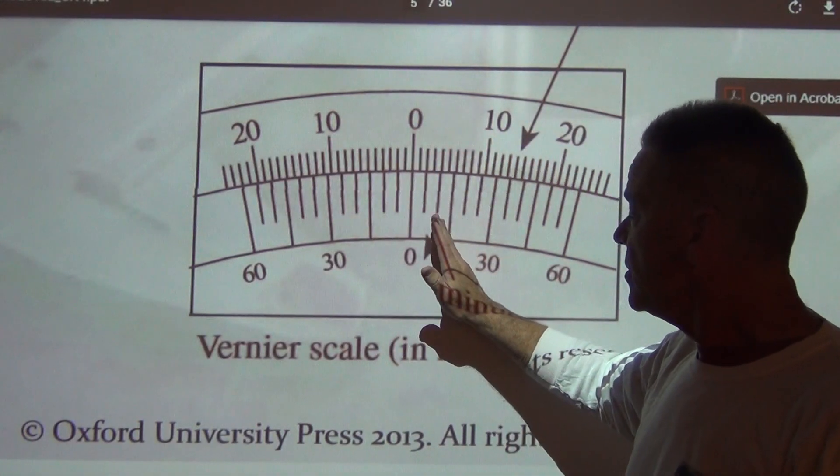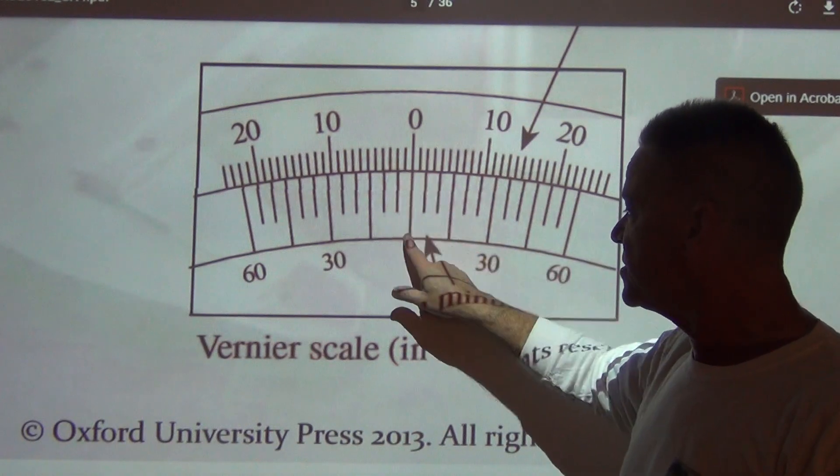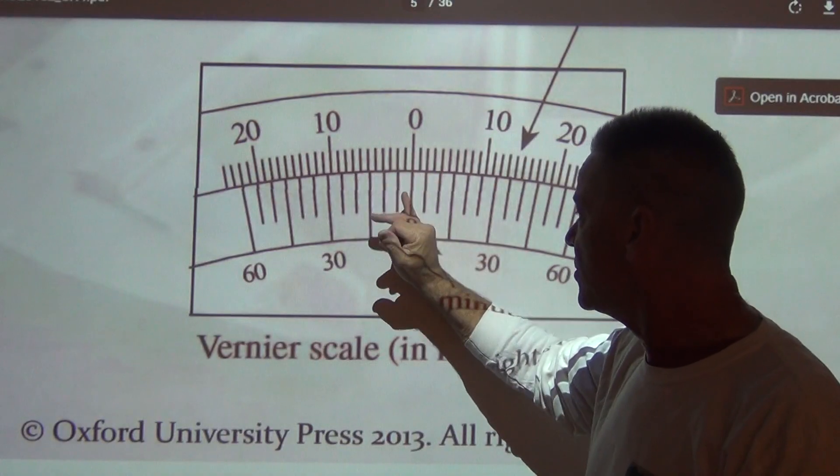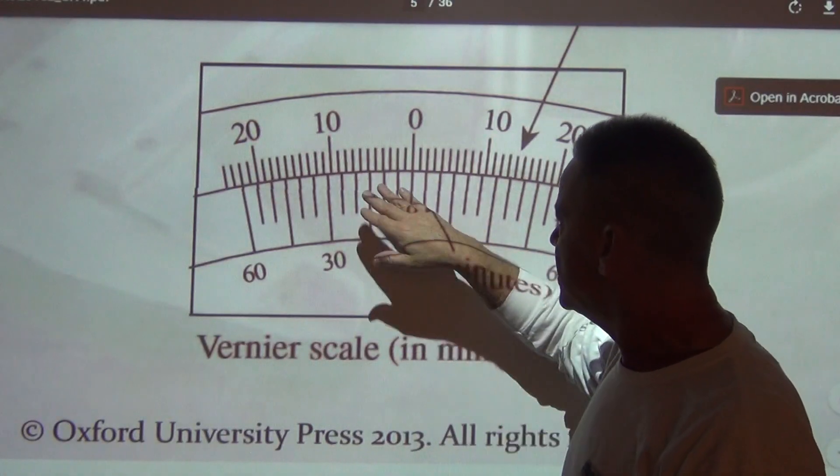And at the moment, this is set with no fraction involved at all, right? This zero lines up perfectly with this zero here, and when you look to either side,